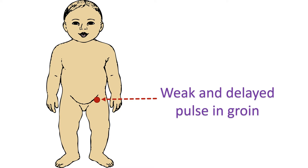As coarctation is present at birth, the blood supply to the lower limbs is lower in severe coarctation of aorta. This can lead to lower growth in the lower part of the body. In a child, coarctation of aorta can be suspected if the pulse in the lower limbs is checked. The pulse is weaker and delayed compared to the upper limbs due to the obstruction of the aorta.